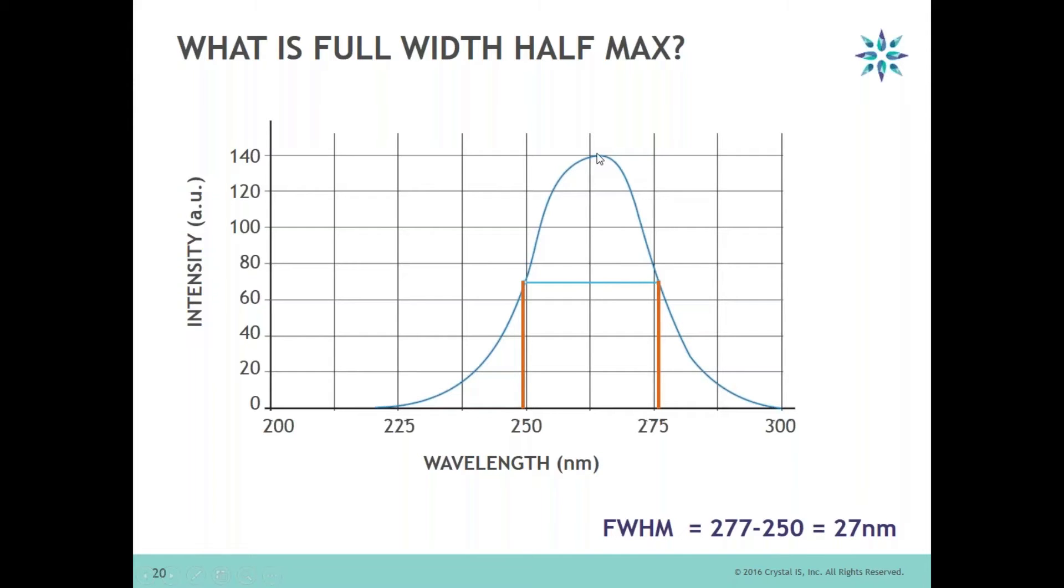We find the maximum intensity for our LED and say where is the half point of this LED. So the half point is, in this case, intensity 140, so the half intensity would be 70. You draw two points at that intensity of 70 and then drop down from those points.